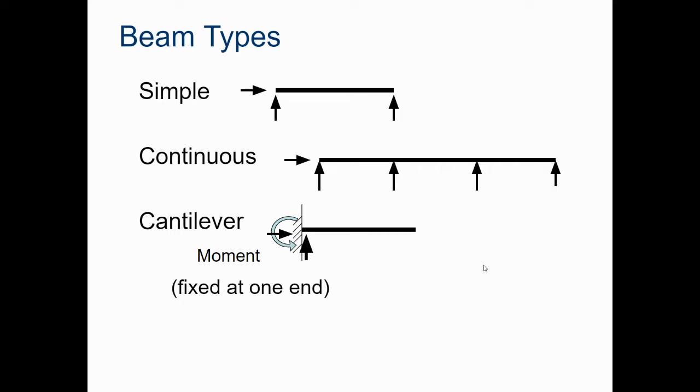The top is a simple beam. The second one down is continuous beam. You can see the forces are applied by the arrows, and they're pointing straight up, and there's multiple forces pushing straight up on that beam. And then you have cantilevered forces, or beam types, which are beams that are only supported at one end.